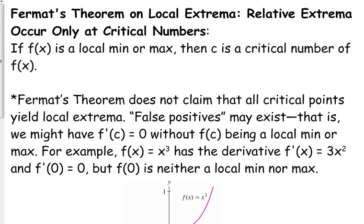Fermat was a very famous mathematician who came up with a lot of stuff. He had a proof — his last proof — that he claimed he proved, but he didn't really prove it. And many, many people spent many, many years trying to prove his last proof.